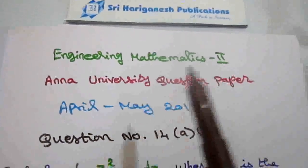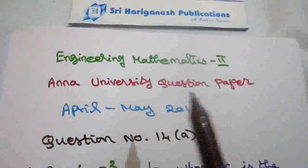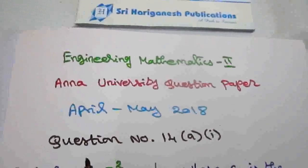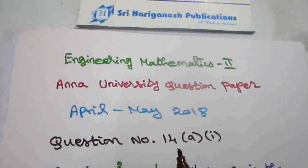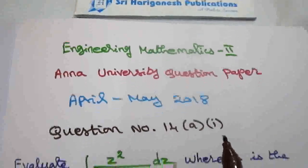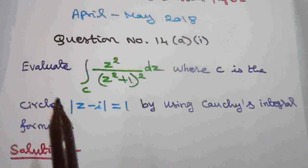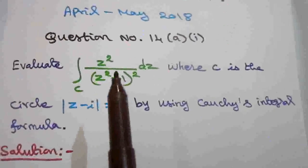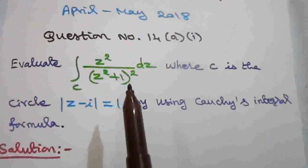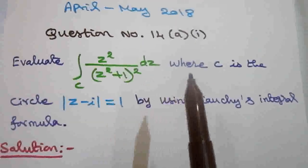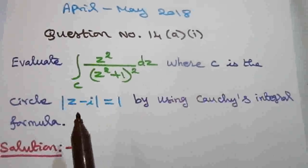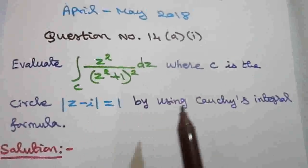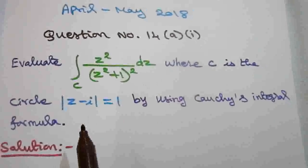Engineering Mathematics 2, Anna University Question Paper April May 2018, Question Number 14A1. Evaluate the integral over c of z squared divided by (z squared plus 1) squared dz, where c is the circle |z minus i| equal to 1, using Cauchy's integral formula.